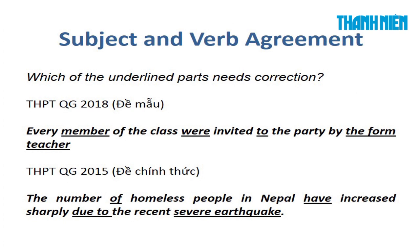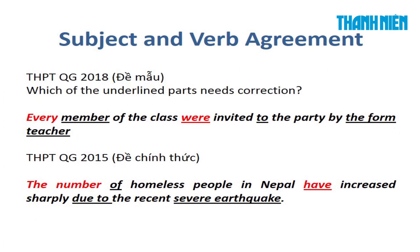Bây giờ cô xin cho đáp án. Câu đầu tiên: 'Every member of the class were invited' — từ 'were' là sai, vì sau 'every' mình phải dùng số ít, đổi lại là 'was'. Câu thứ hai: 'The number of homeless people in Nepal have increased' — lỗi sai là chữ 'have', mình phải đổi lại là 'has' (singular verb), vì chủ ngữ ở đây chia theo chữ 'the number' — con số, số lượng những người vô gia cư đã gia tăng.